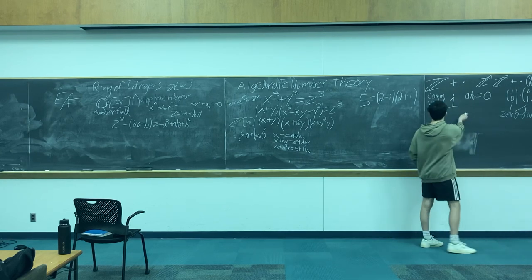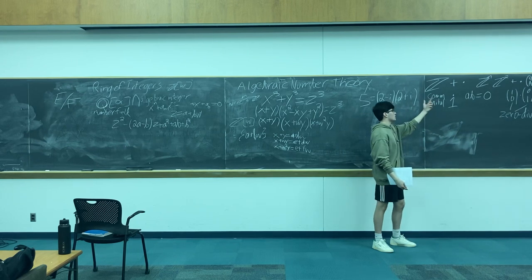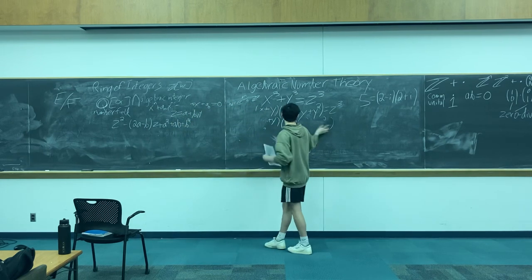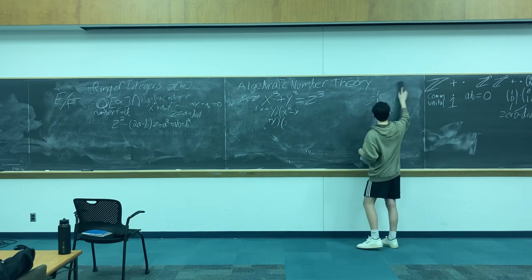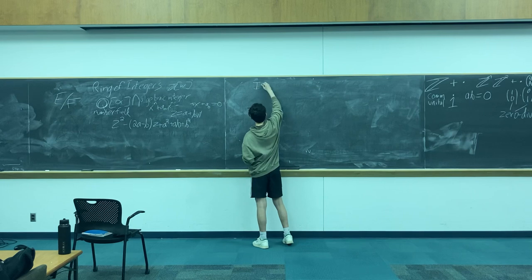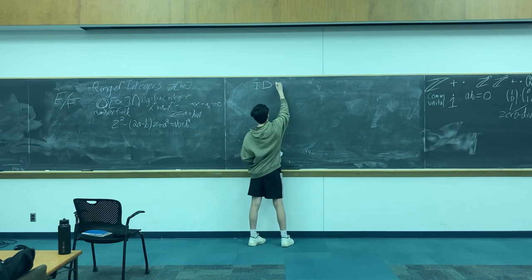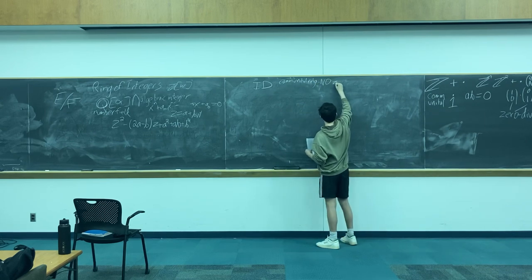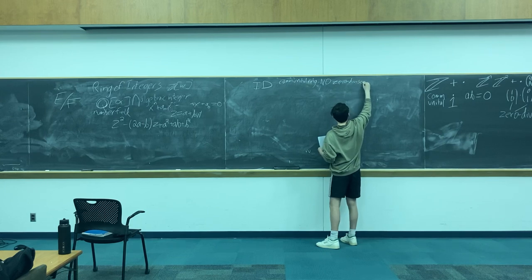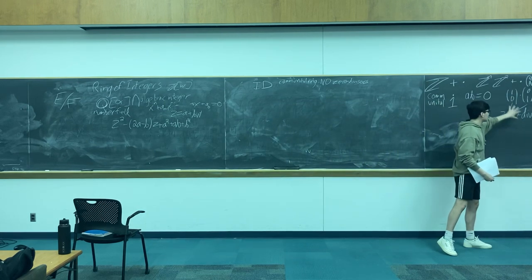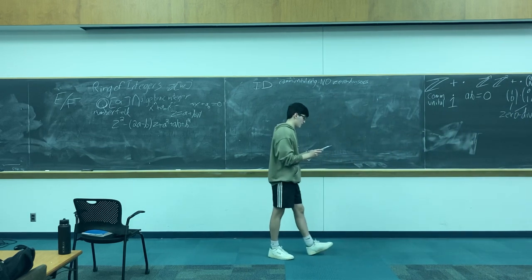The key point is we've seen what a commutative unital ring is — a set with addition and multiplication that behave how you'd expect — and we've seen the notion of a zero divisor. We use this to define our first type of domain, which is the foundation for the rest: an integral domain. An integral domain is just a commutative unital ring with no zero divisors. It behaves kind of like the integers — hence the name, integral domain.